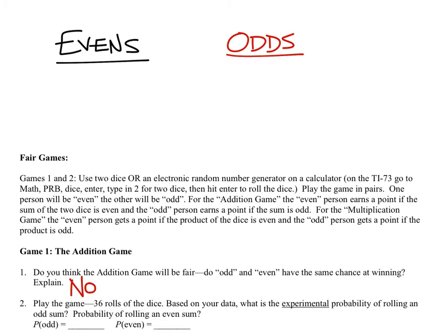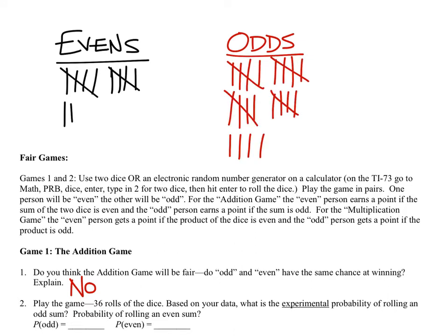After rolling, we got 12 evens and 24 odds. Based on this experiment, it does not look like a fair game — our initial assumption appears correct. Now let's calculate the experimental probabilities and then check the theoretical ones to see if the game actually is fair.